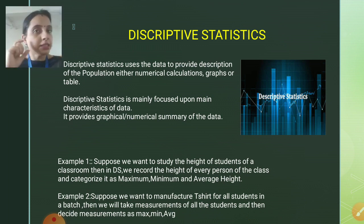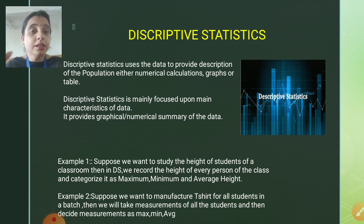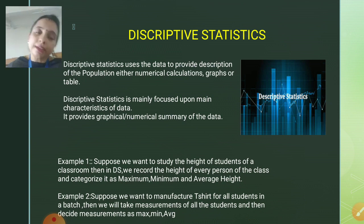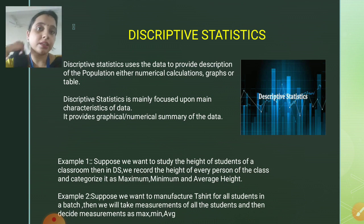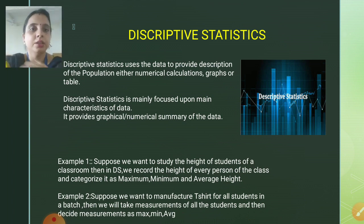In this case, I will be able to decide that the maximum size of the t-shirt should be 48, minimum size should be 40, and 45 should be the average. This is the conclusion that statistics gives you. If we are using descriptive statistics, then we need to conclude by considering each and every data present in a dataset.